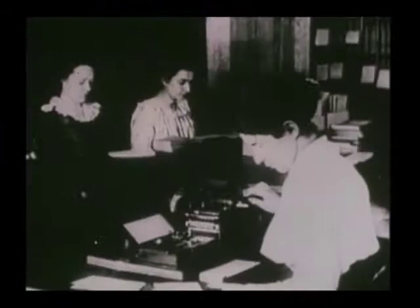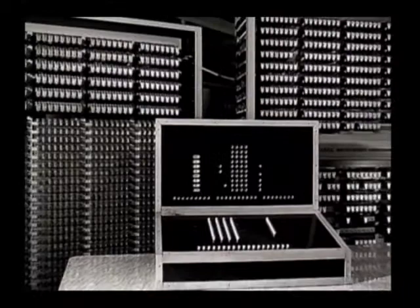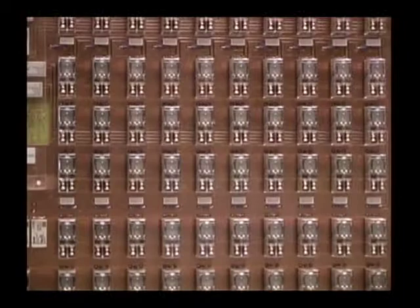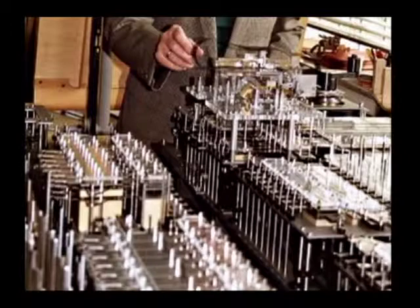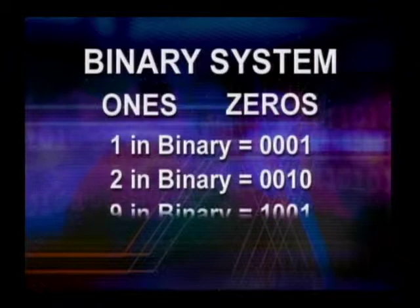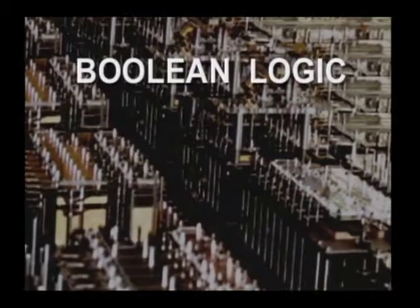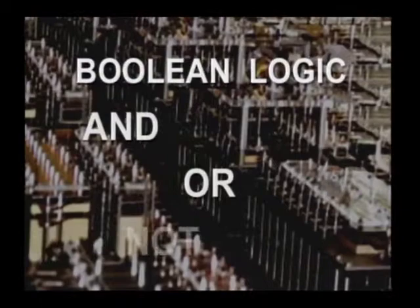Over time, many people improved on Babbage's ideas until December 1941, when Konrad Zuse, a German engineer, completed his Z3 calculator — the first general-purpose, program-controlled calculator. The Z3 was electromechanical, using telephone relays made of iron rods and wire coils. It operated on a binary system of ones and zeros, and its internal logic was based on Boolean logic — simple true and false operations like AND, OR, and NOT. Binary and Boolean logic are common to nearly all computers.